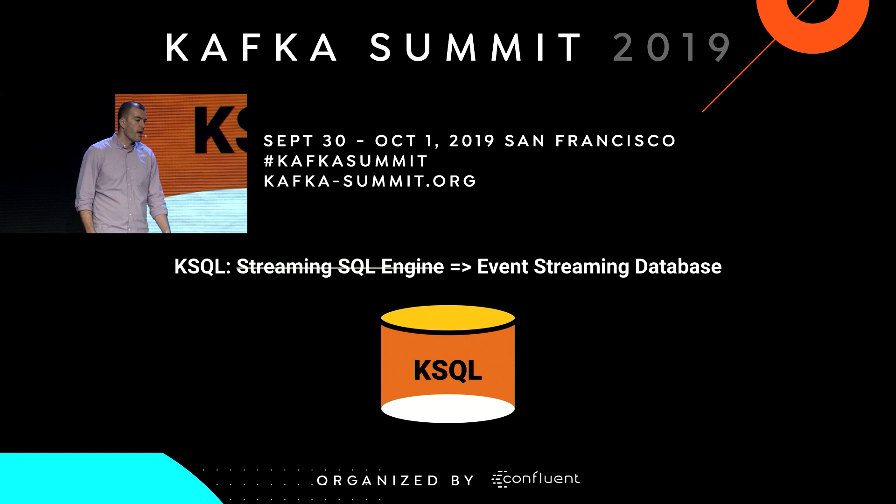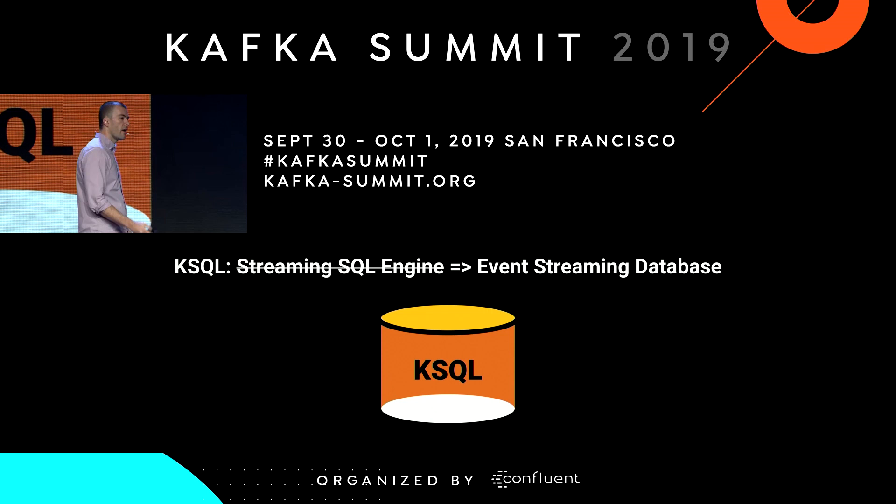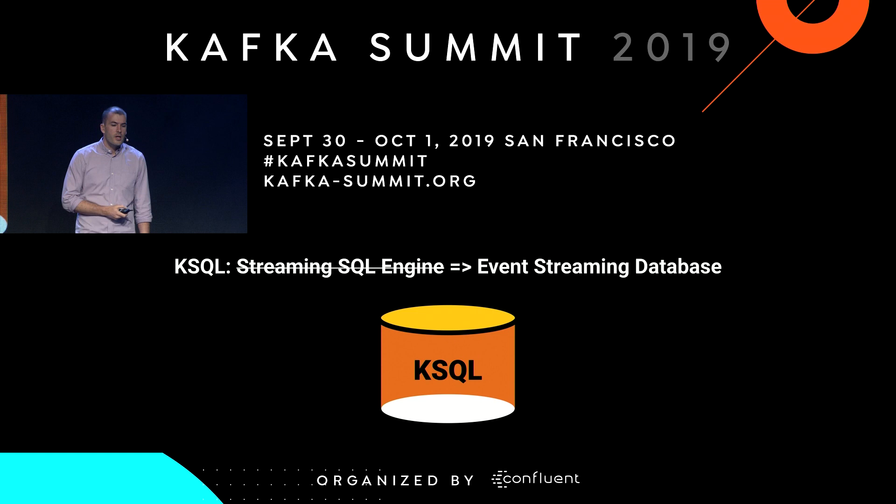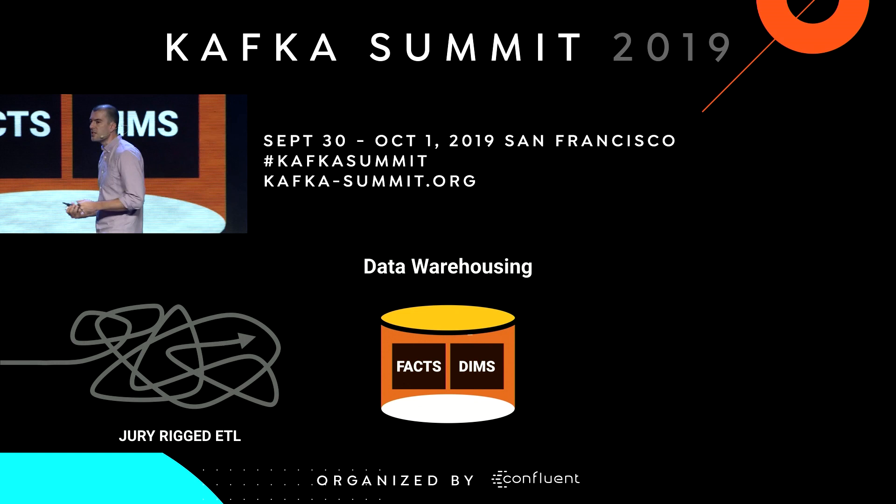Putting these two things together, you get a version of KSQL that works in both directions — a very powerful thing. It changes what KSQL is, from being a streaming engine — almost a SQL dialect for using Kafka Streams — to something more general: a kind of event streaming database. You're issuing remote queries to a system that's materializing and storing distributed state available for processing. This is a natural generalization of what databases do. To illustrate that, I want to compare it to data warehousing.